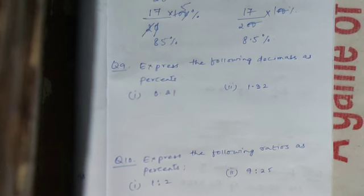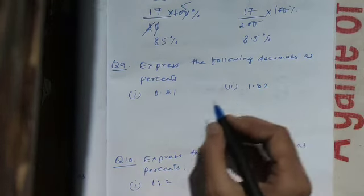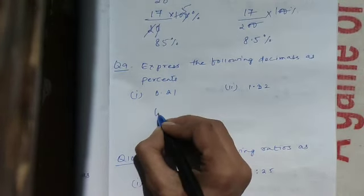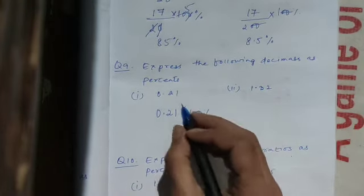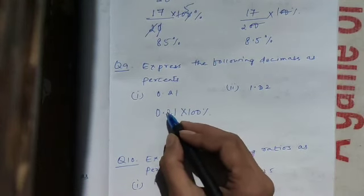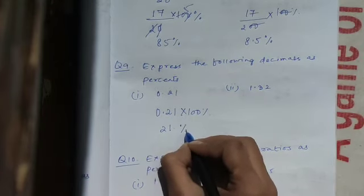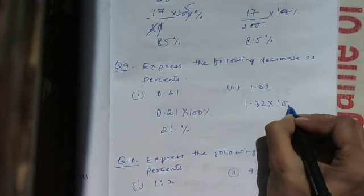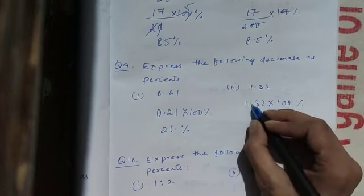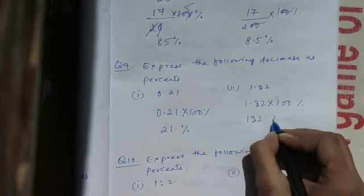Question number 9: express the following decimals as percent. For 0.21, multiply by 100 percent. Since we are multiplying, the decimal jumps forward 2 digits — giving 21 percent. For 1.32, multiply by 100 percent: decimal jumps forward 2 times, giving 132 percent.